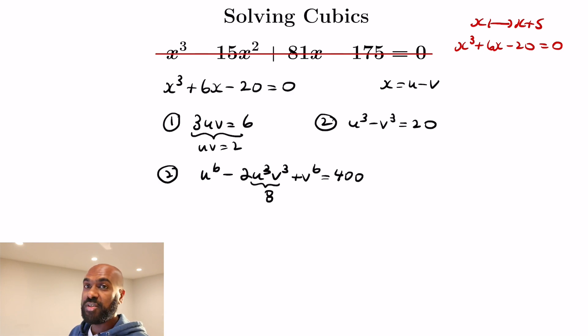that gives us that u cubed v cubed is 8, and so that means that u to the 6 plus v to the 6 is equal to 416 if we rearrange things.